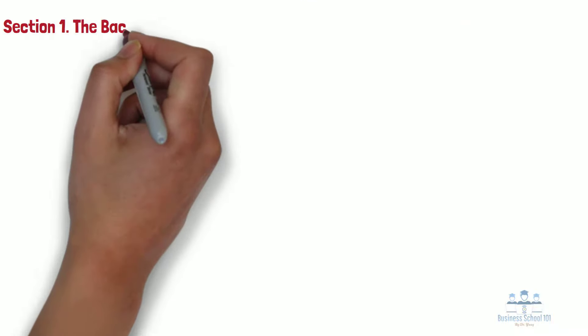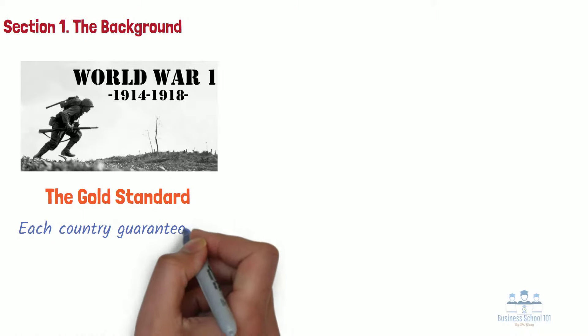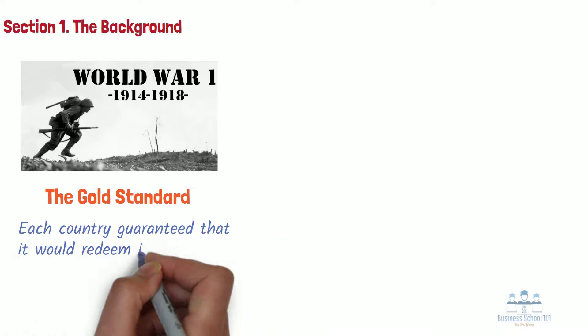Section 1: The Background. Before World War I, most countries were on the gold standard, which means each country guaranteed that it would redeem its currency for its value in gold. The gold standard worked reasonably well from the 1870s until the start of World War I in 1914, when it was abandoned.